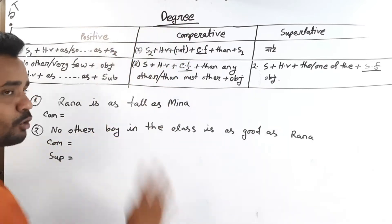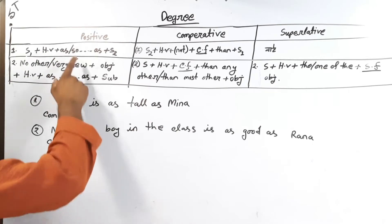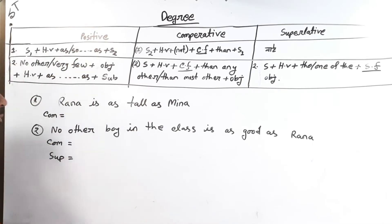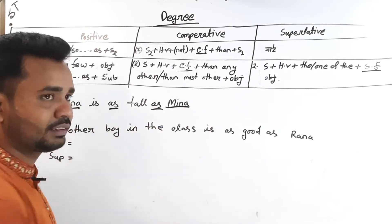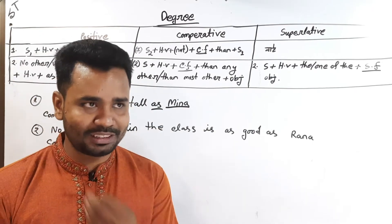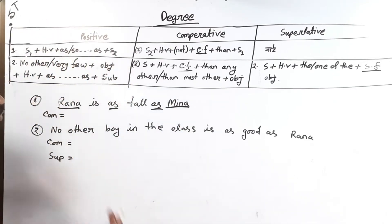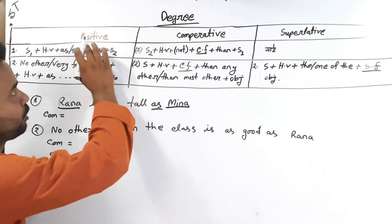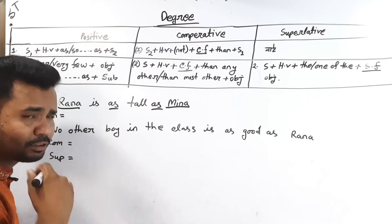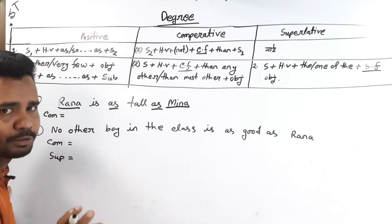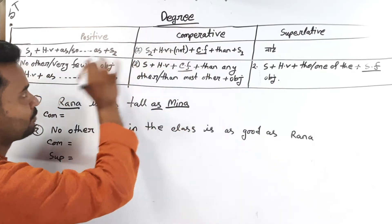Positive to comparative: subject 1 and subject 2. So if we call subject 1 and subject 2, the first thing we start to do is positive to comparative. If it's positive to comparative, the first one is subject 1 and subject 2.